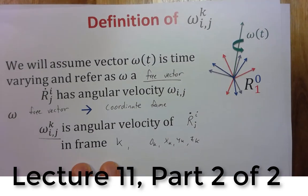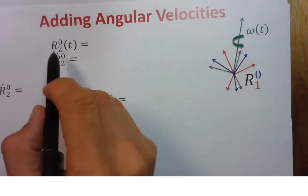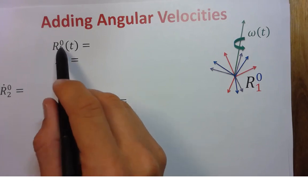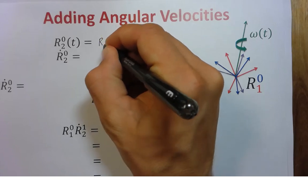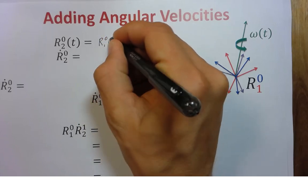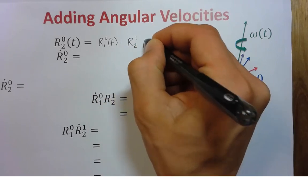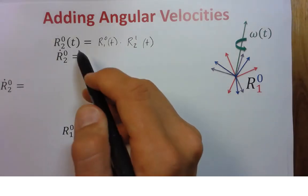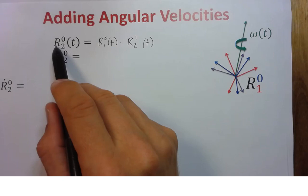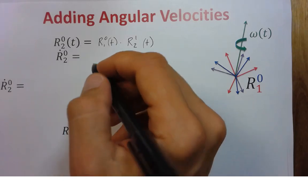Now it's time to talk about adding angular velocities together. If we have a rotation matrix R_{2,0}, we can write it as R_{1,0}(t) times R_{2,1}(t), because rotation matrices compose. To take the time derivative, we drop the explicit t and apply the chain rule.